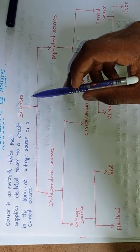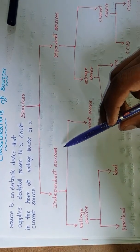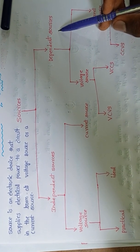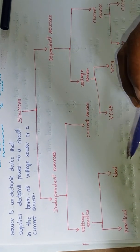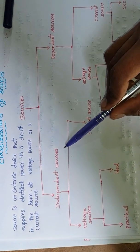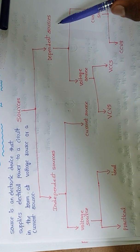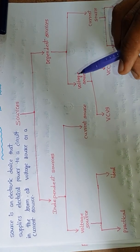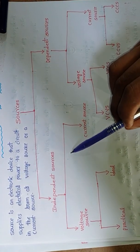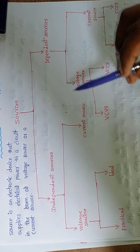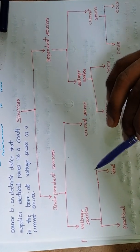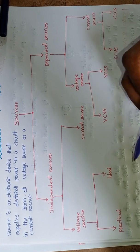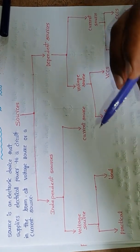Sources are mainly classified into two types. The first one is independent sources and another one is dependent sources. I will explain what independent sources and dependent sources are in later videos. Independent sources are classified into two types: one is voltage source and another one is current source.